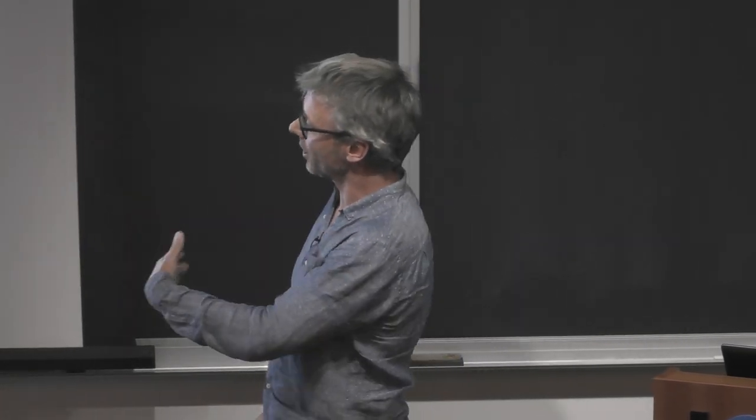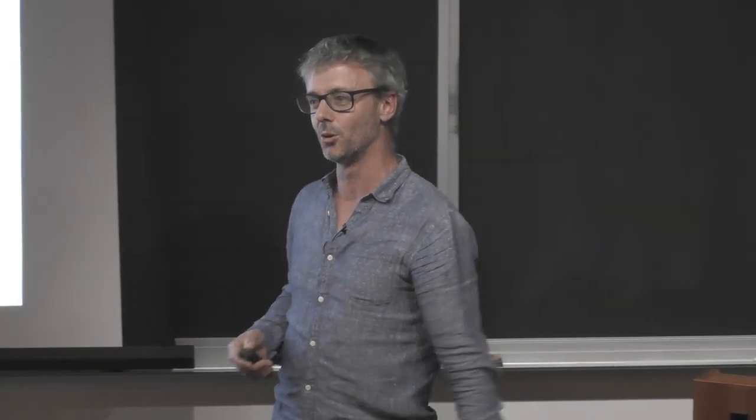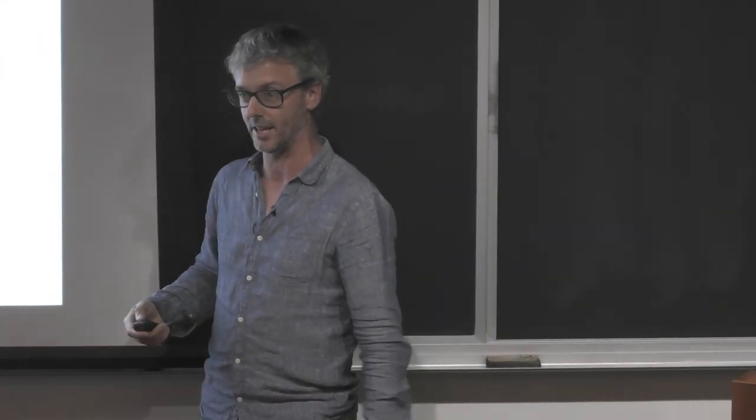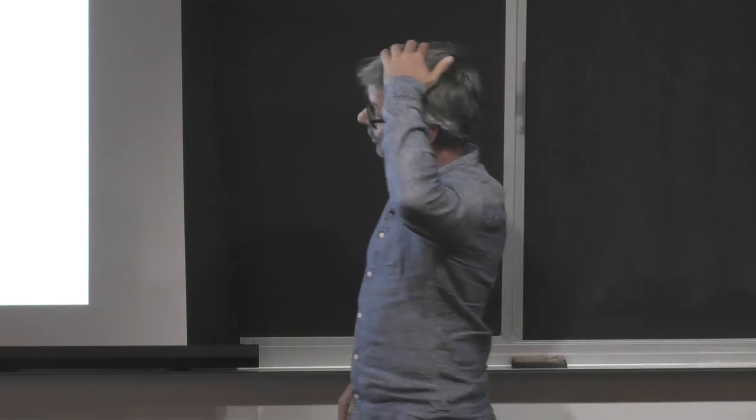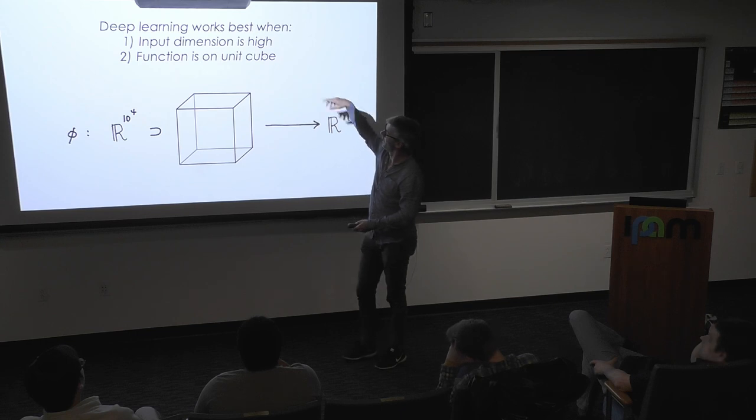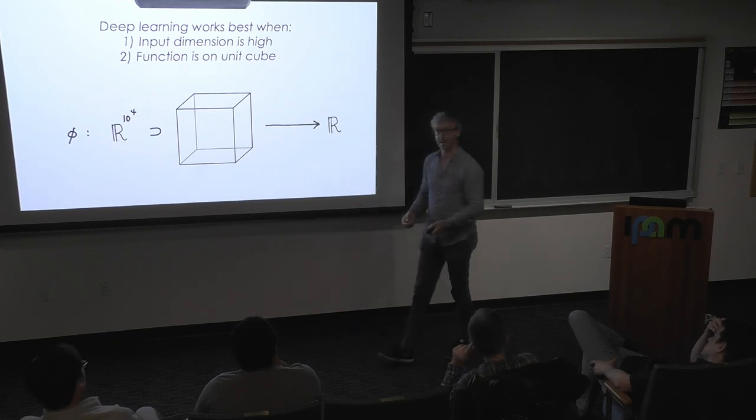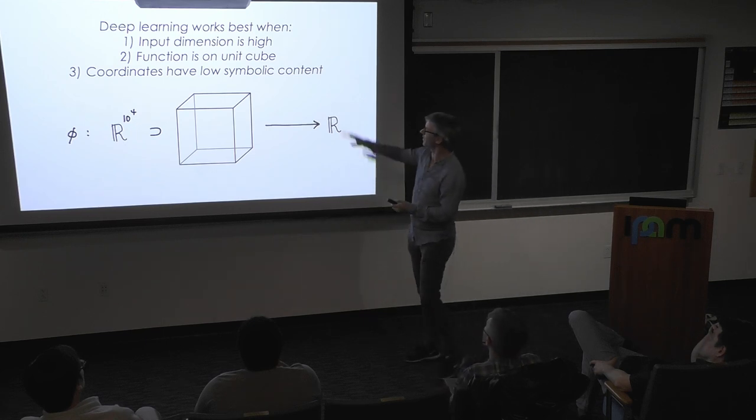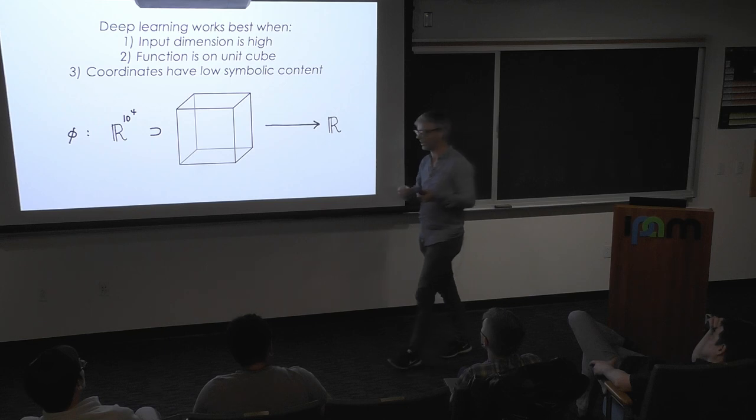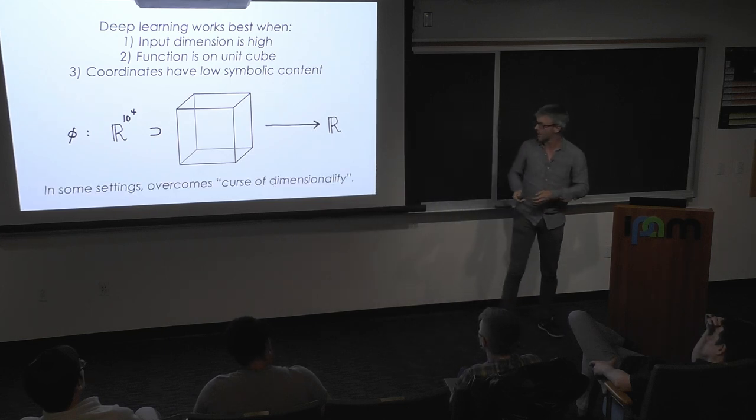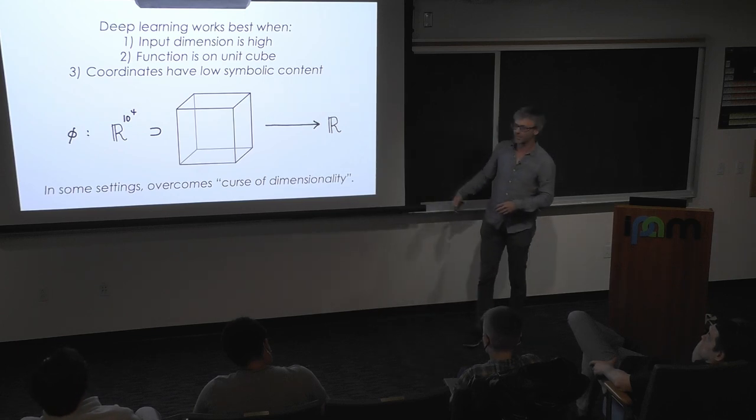So just some very simple heuristics in terms of what kind of problems one wants to use deep learning on. The input dimension is high. If your function is on a two-dimensional vector space, we have many tools in mathematics to do that. It's really interesting when you have cursive dimensionality. Functions on the unit cube. When you use these libraries, they have initialization schemes so it's important to know what the libraries expect. And coordinates have low symbolic content. You don't want small changes in your input to drastically affect the output.